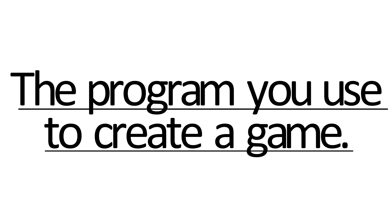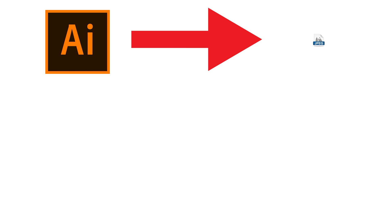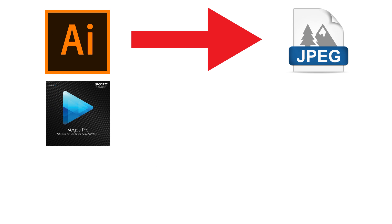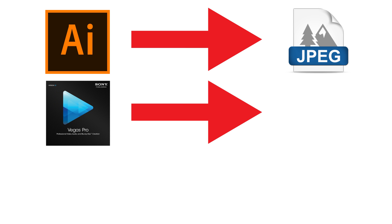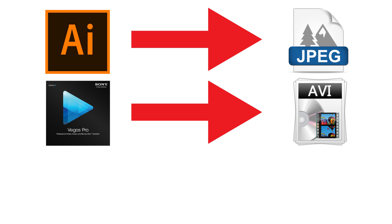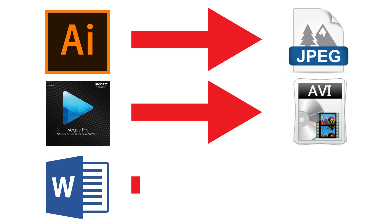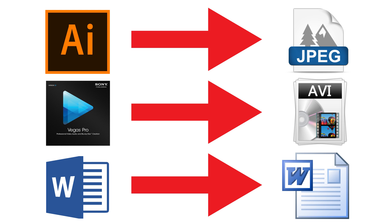If I had to put it into one sentence, I would say a game engine is essentially the program that you use to create your game — the Adobe Illustrator to your picture, the Sony Vegas to your video, or the Microsoft Word to your document.